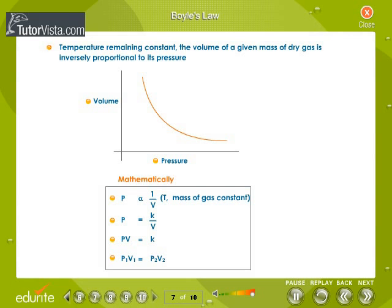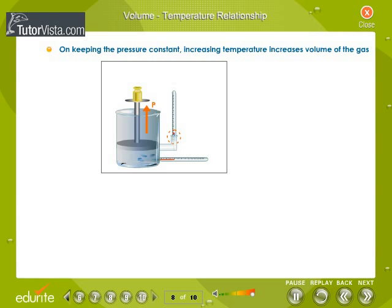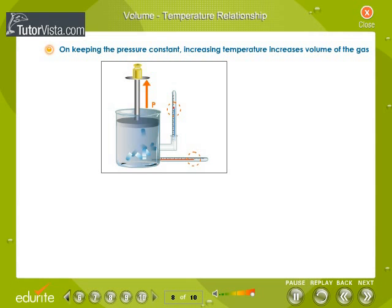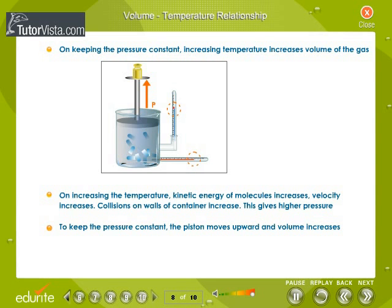At constant mass of gas and constant temperature, gas volume is inversely proportional to its pressure. Volume-temperature relationship: keeping pressure constant, when temperature increases, molecular velocity increases, resulting in an increased rate of collision. To maintain constant pressure, the piston moves up, increasing the volume.